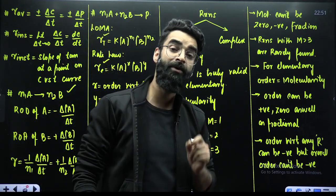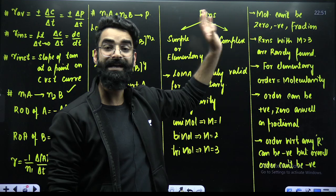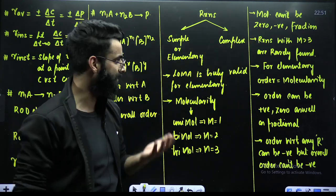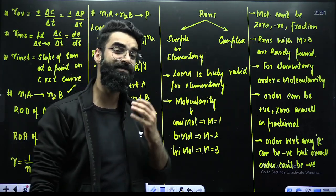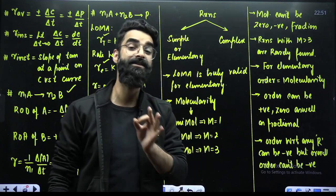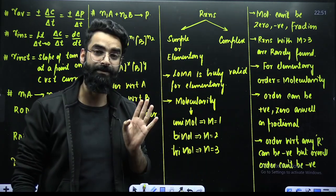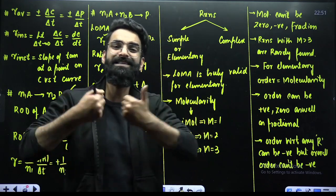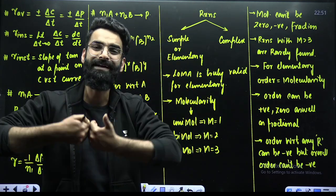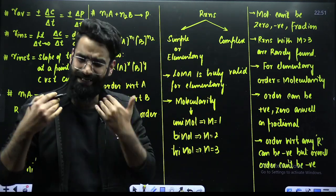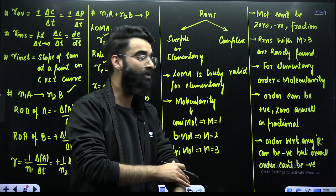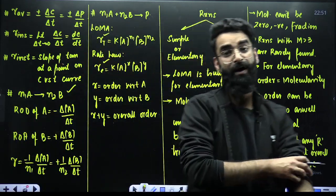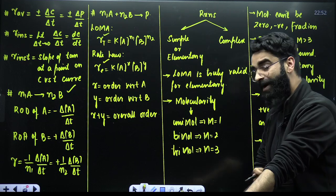There are a few things to remember about molecularity: it can never be zero, it can never be negative, and it can never be fractional. Reactions with molecularity greater than 3 are rarely found because the probability of more than three reacting species colliding simultaneously is very low — that is why such reactions are rarely observed.